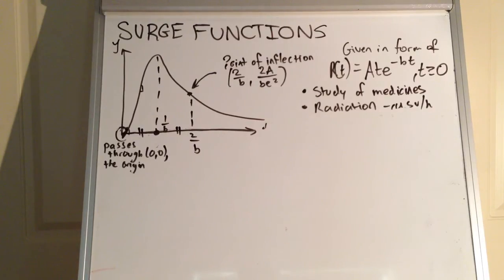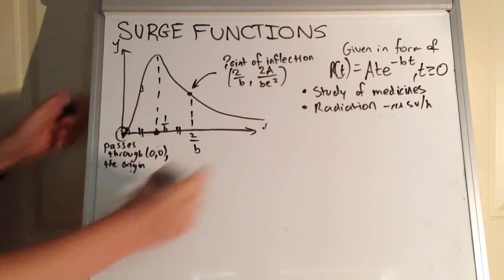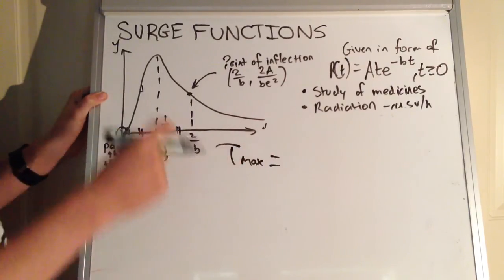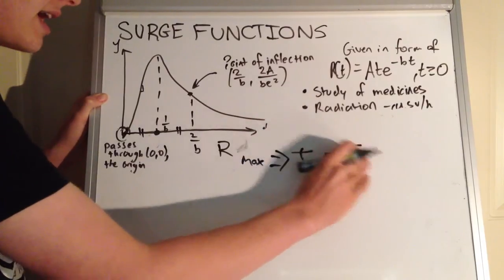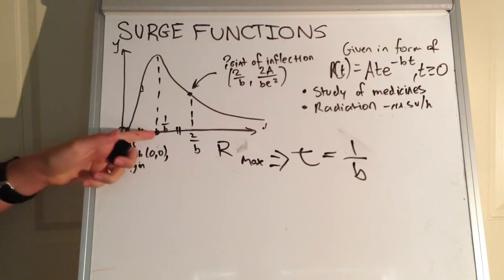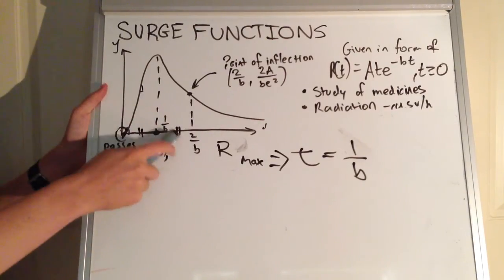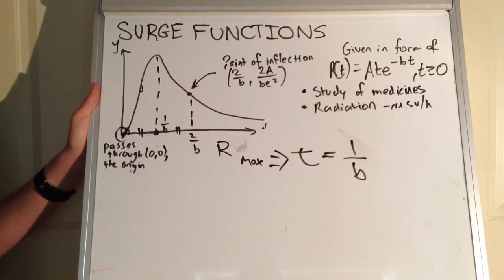The third part asks us to find the time at which the radiation was at a maximum, and to find the exact value of the maximum radiation at this time. We know the maximum occurs when t equals 1 over b — as shown on the board. The maximum is at 1 over b, and the point of inflection is at 2 over b, so they are equidistant from the origin. We can immediately identify what time it will be when the radiation level is at a maximum.